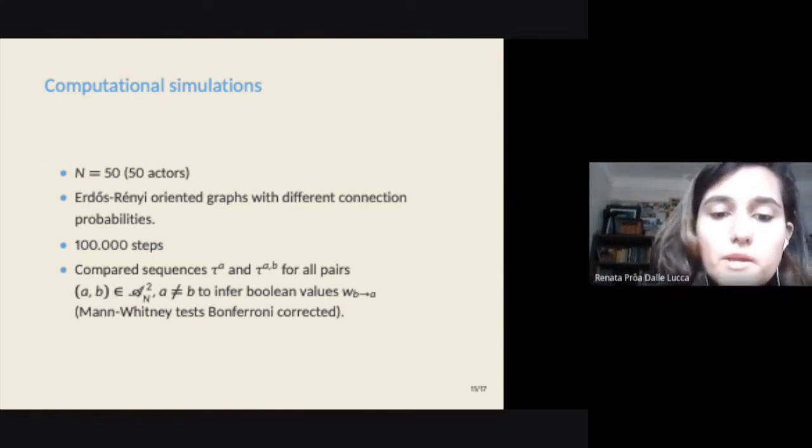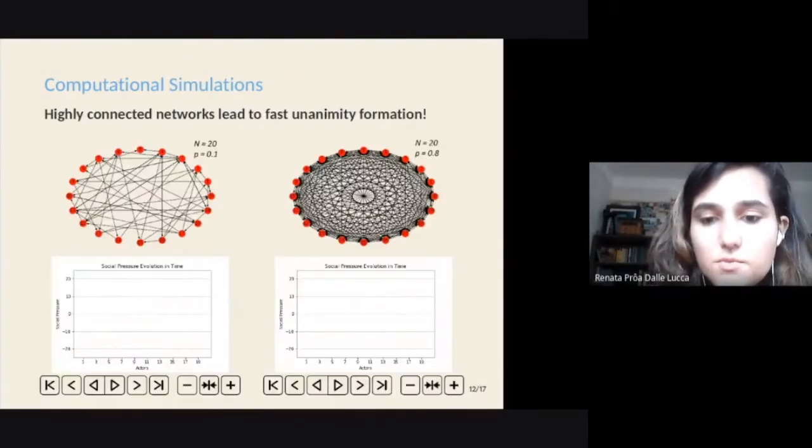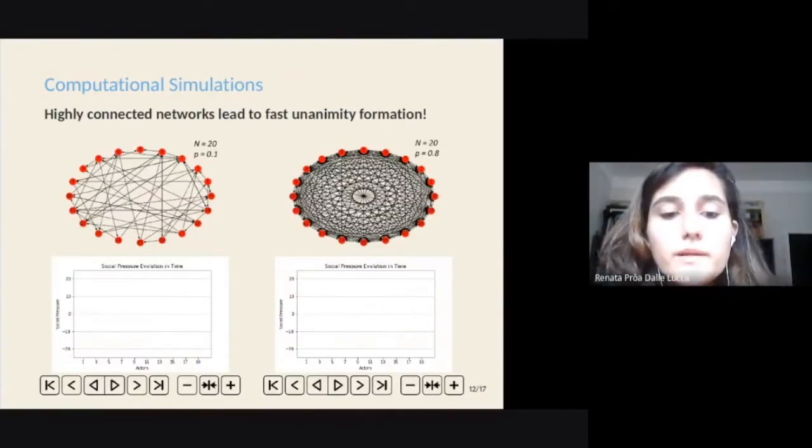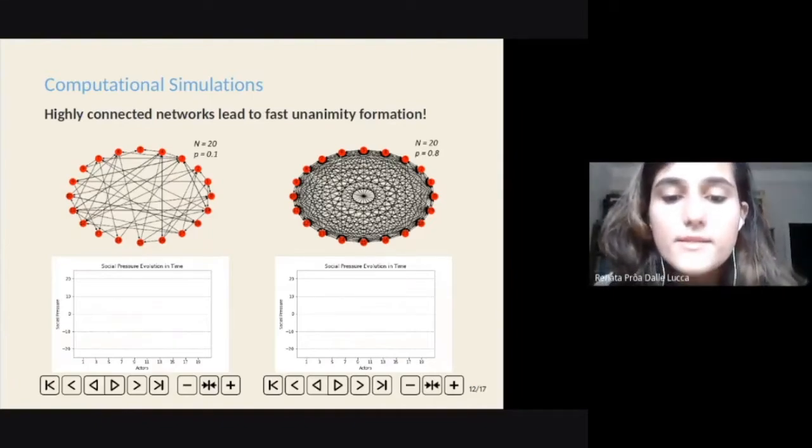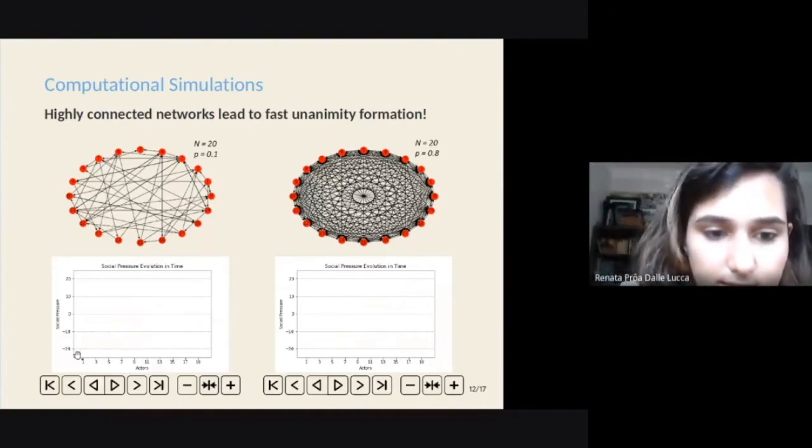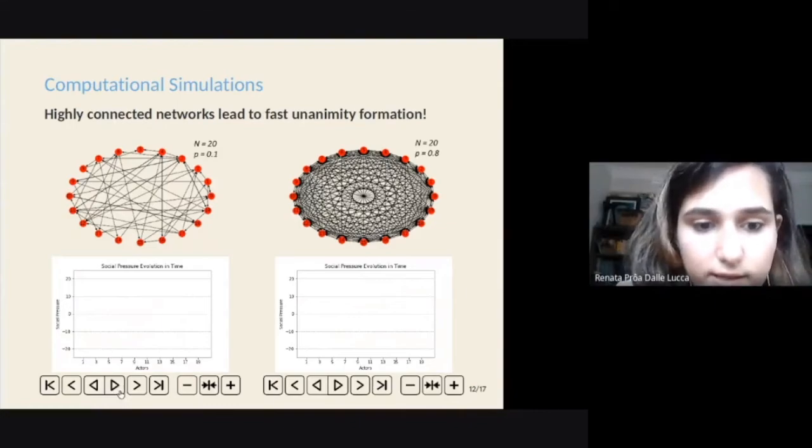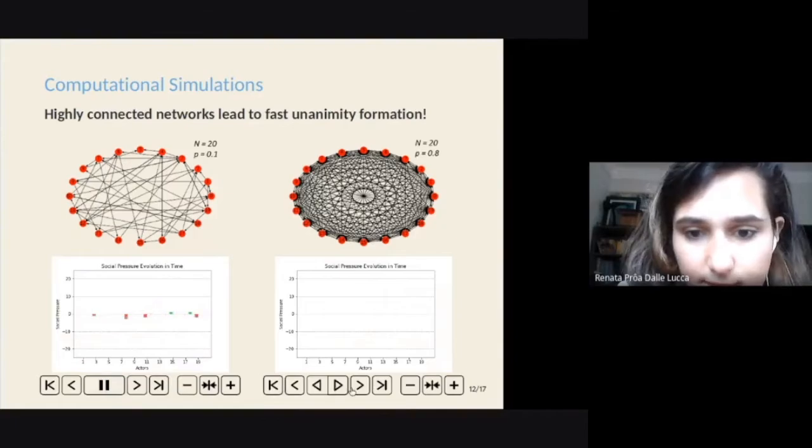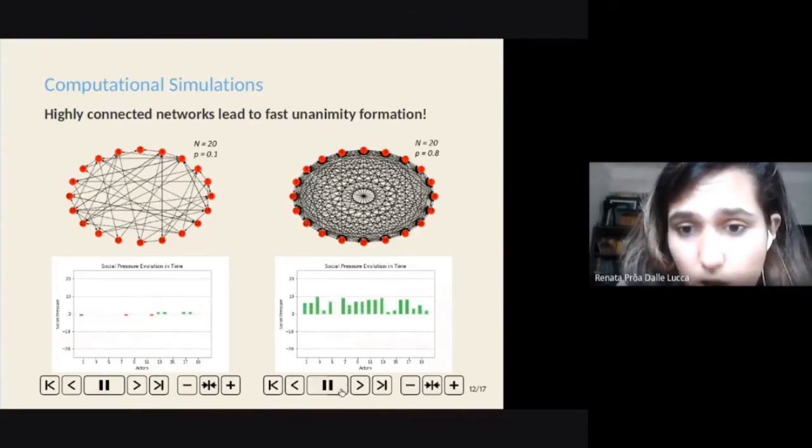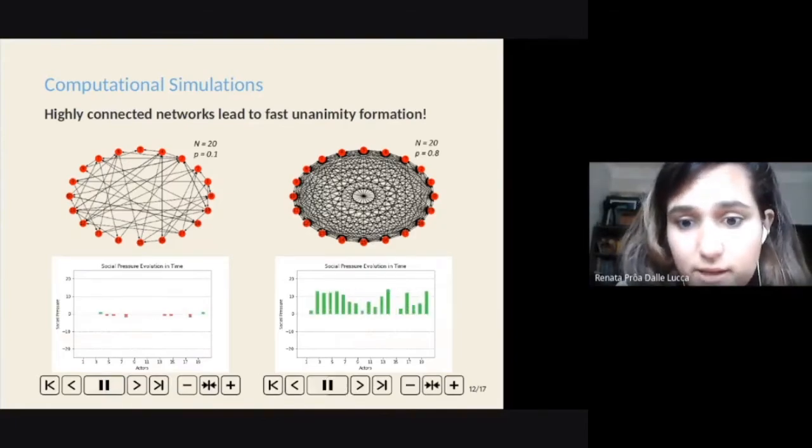So, what we noted from our computational simulations was that highly connected networks lead to the rapid establishment of unanimity, as we may see in this example, where this is the evolution of a highly connected network.